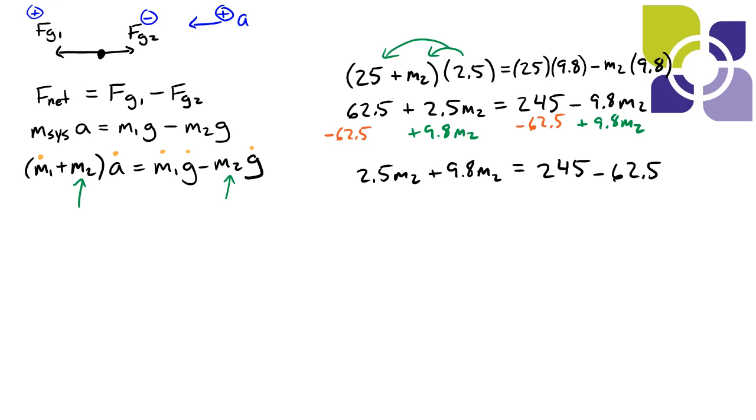These are like terms they have the same variables we can add them together. That's 12.3 m2 on the left and 245 minus 62.5 is something we can do, 182.5.